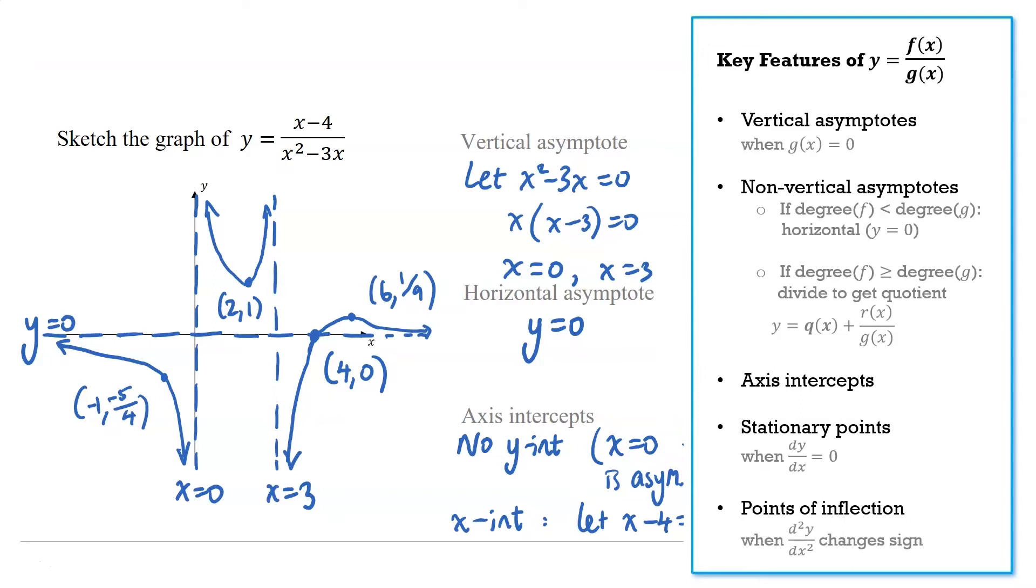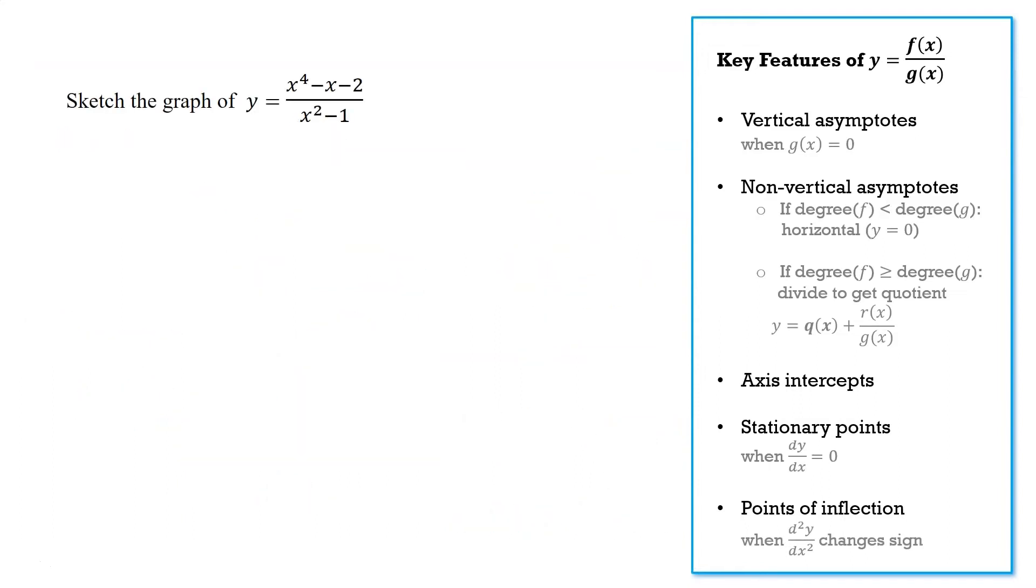We'll look at another example. This one is different because the numerator has a larger degree than the denominator. So our first step is going to be to divide through to express it in quotient remainder form. That will be necessary for us to see that non-vertical asymptote. So I'm going to use a long division method here, putting those zero terms in so we have all the placeholders.